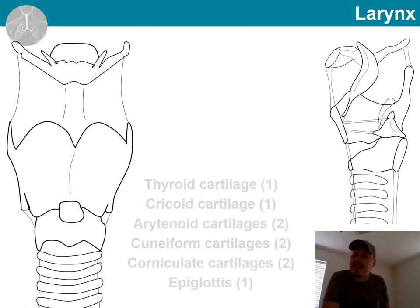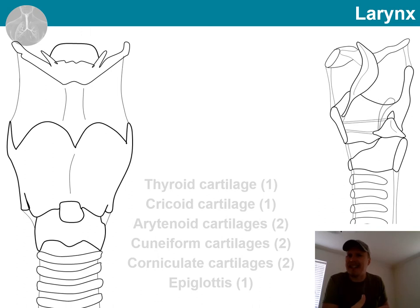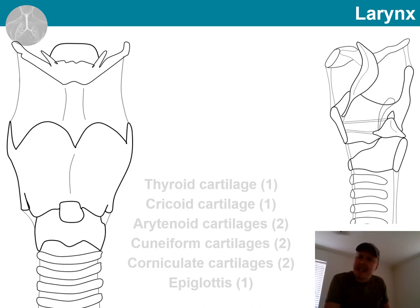What we see here is a view from the anterior side on the left side of the screen and a sagittal section on the right side of the screen. I had to scale these a little differently so that I could fit everything onto this screen. Next, we will go through all nine cartilages that make up the larynx.